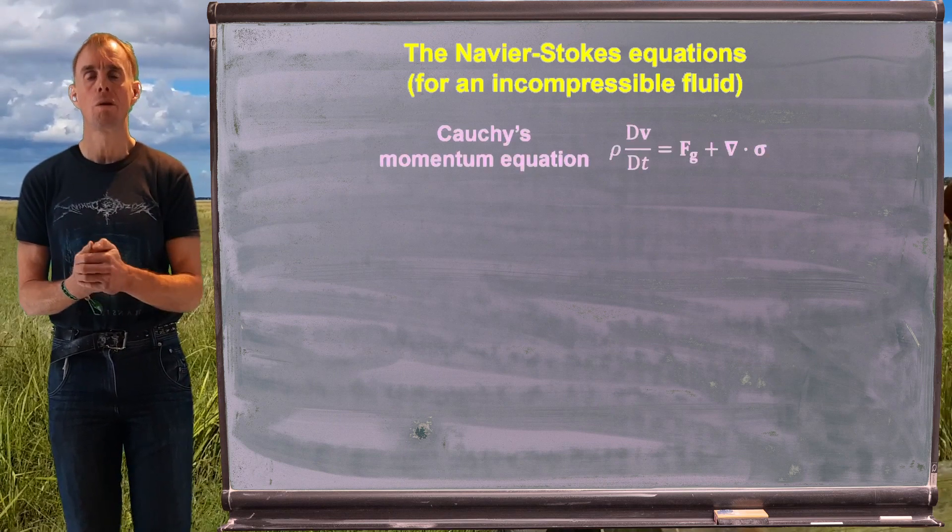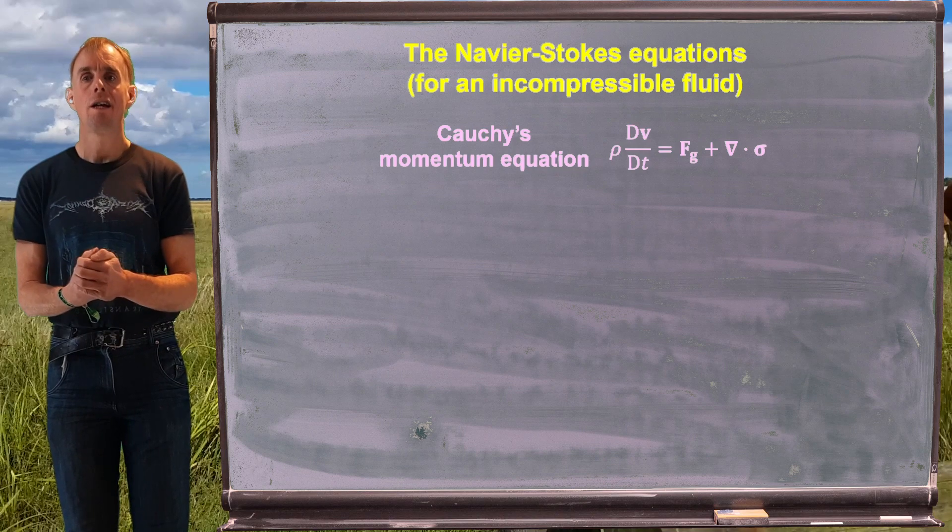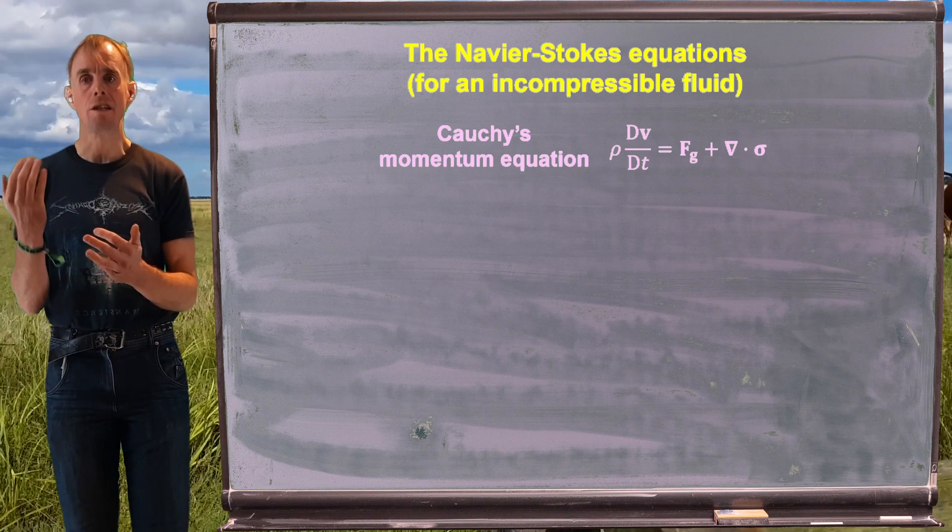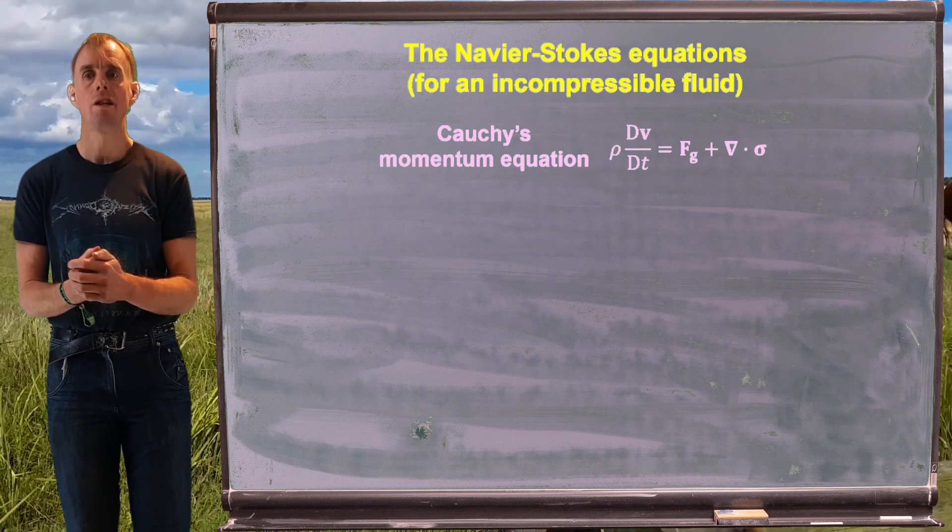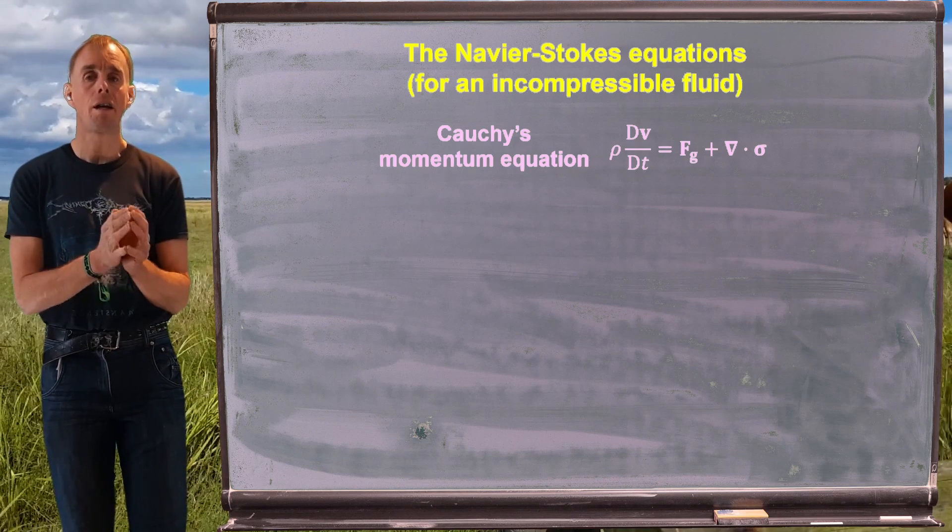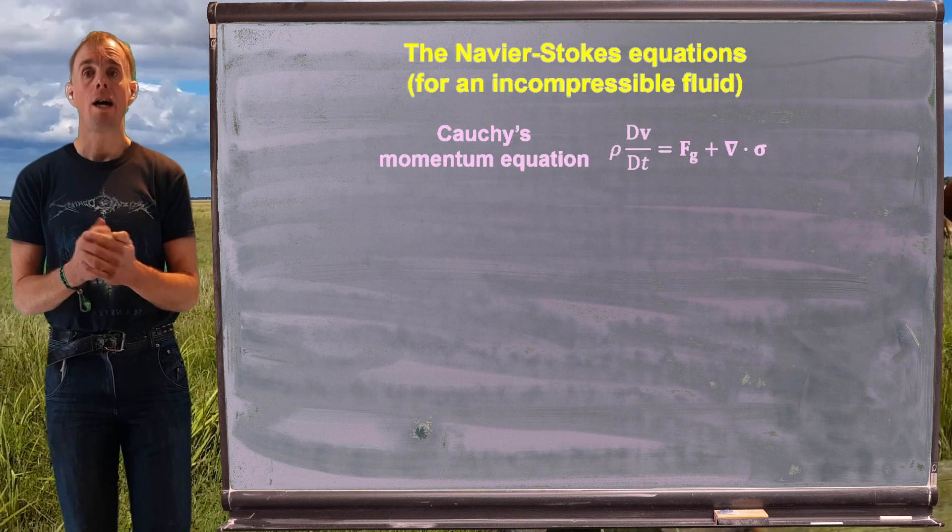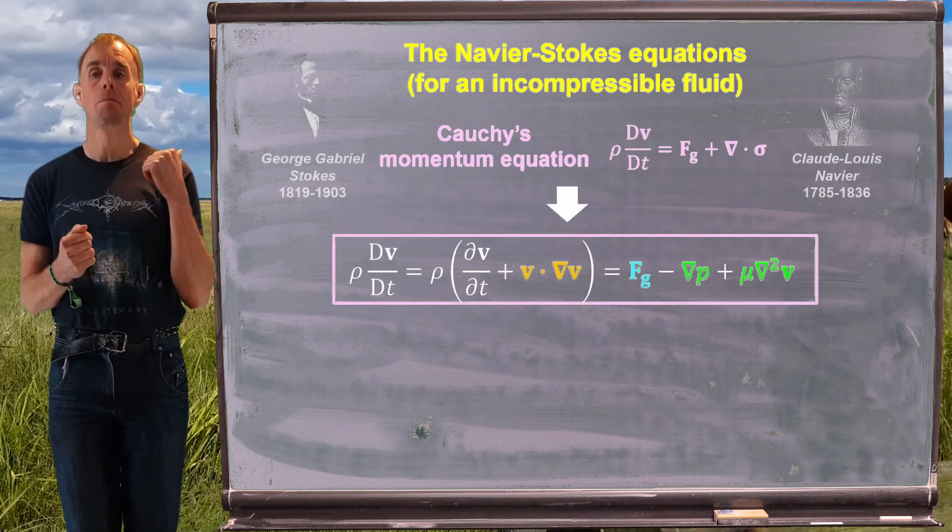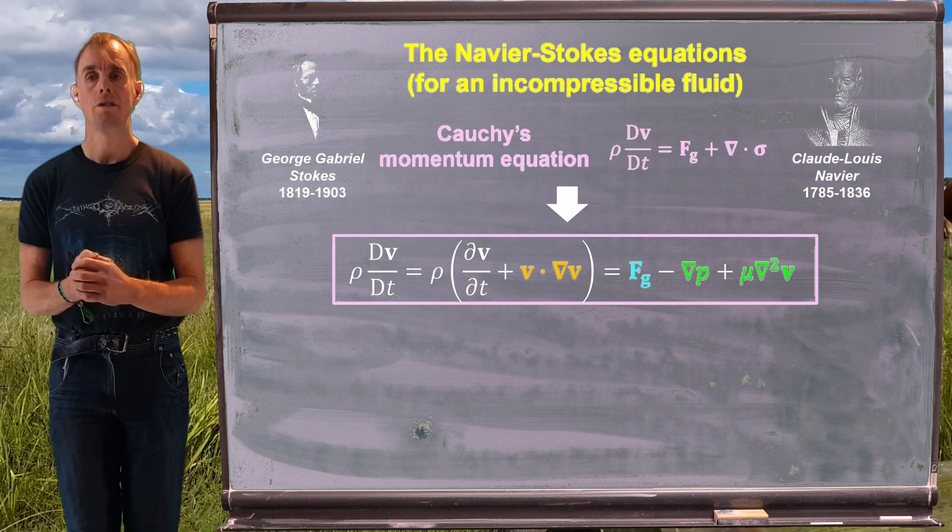So there's Cauchy's momentum equation. The left-hand side is rho total dv by dt, or substantive dv by dt, so it's the spatial and temporal acceleration, equal to body forces plus surface forces. And we've just discussed surface forces in some detail, and we know it's minus grad p plus mu del squared v.